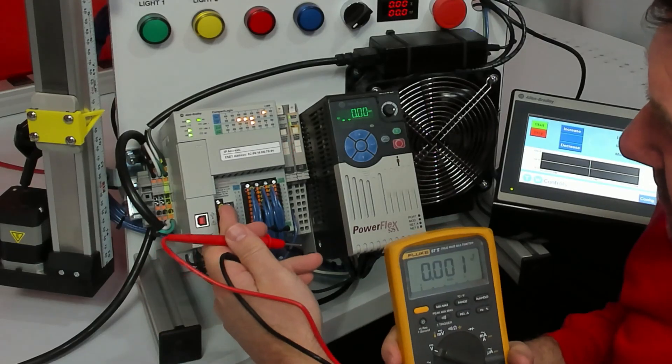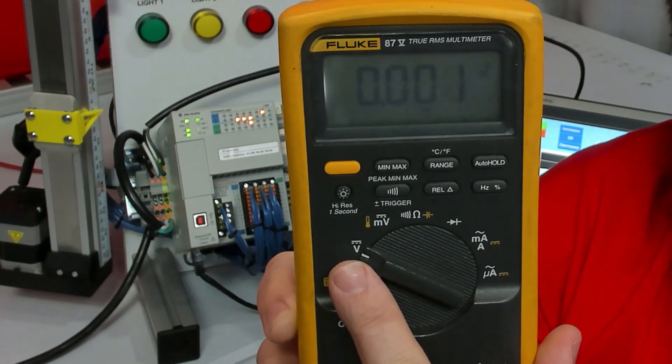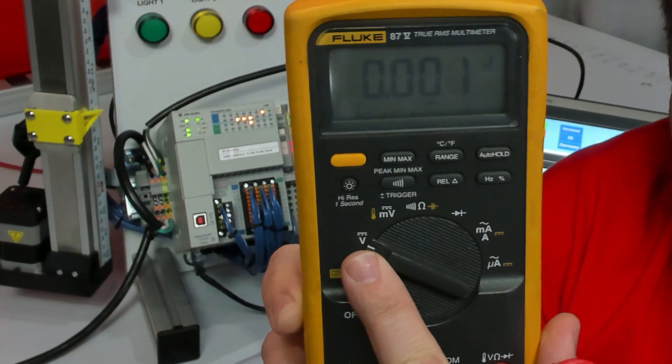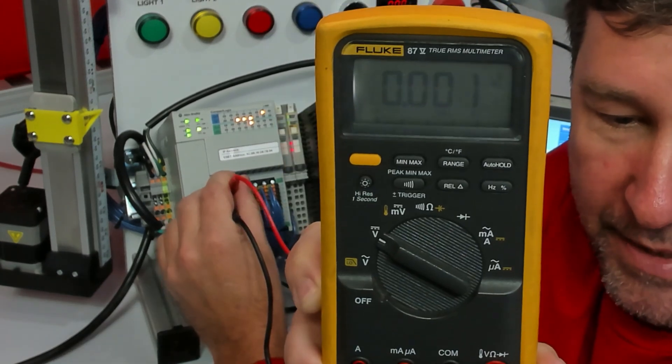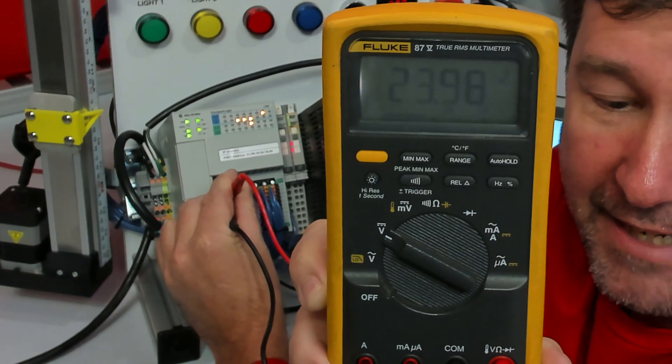Our CompactLogix PLC is powered by 24 volts. I'll set my meter to volts DC, and you can tell it is DC because that's a solid line with a dash underneath it. When I check the CompactLogix power supply, I get 23.98 volts.